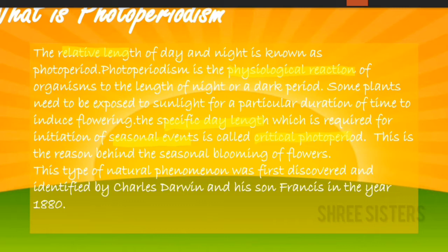This is the reason behind the seasonal blooming of flowers, because the sunlight duration differs for every season — some days it's available from five to four o'clock in the evening only. The power of sunlight also differs from season to season, so this is the reason behind seasonal blooming.